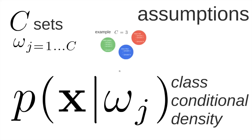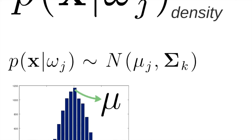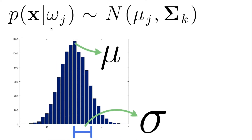In the Maximum Likelihood Estimation method, the class conditional density is represented by a Gaussian distribution. Suppose that we have lots of sample values — this means that they behave like a Gaussian — and we can discover the value mu, which is the average of all values, and also Sigma, which represents the standard deviation of this distribution.